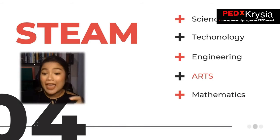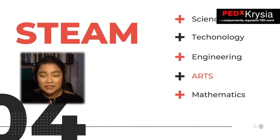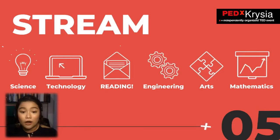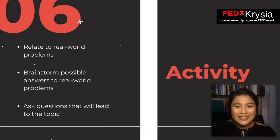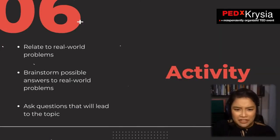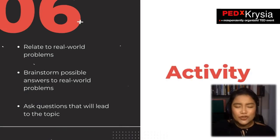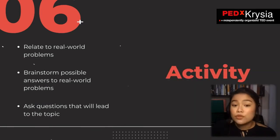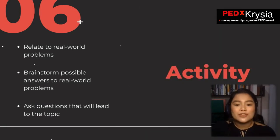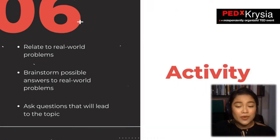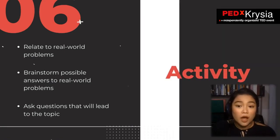Aside from STEM, there are two other strands of these advanced educational systems. STEAM, where the A stands for arts, and STREAM, where the R stands for reading — both incorporating humanities subjects. In the 5A's, the first A is activity. In a STEM classroom, activities are important and should relate to real-world problems. Teachers are facilitators while students brainstorm answers, and teachers can ask questions that lead to the topic of the day.